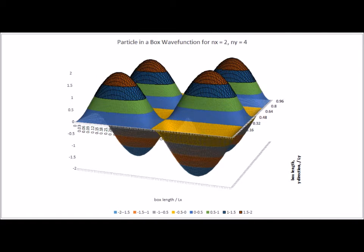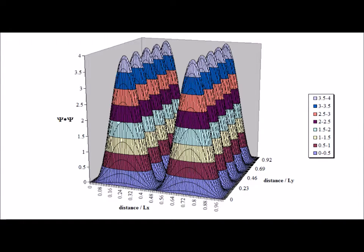Here is the case for n sub x equals 2 and n sub y equals 4. We have one node in the x direction and three nodes in the y direction. Here is the probability density psi star psi. For n sub x equals 2 and n sub y equals 4. Note that there are eight maxima to the probability function.